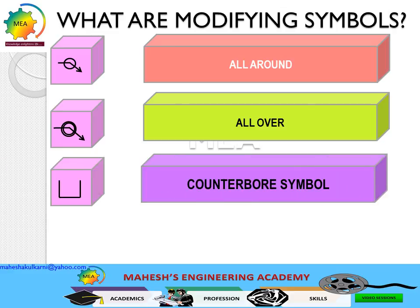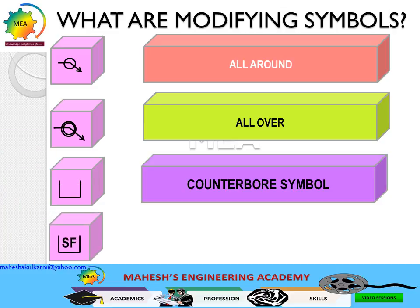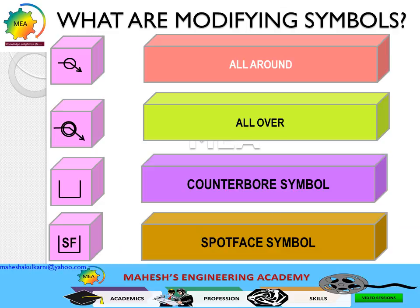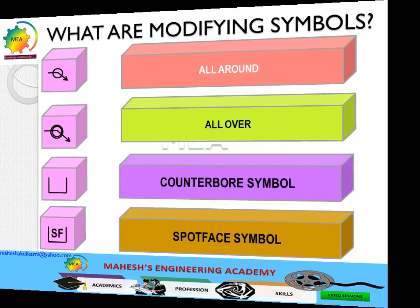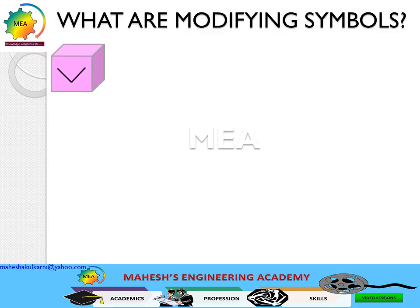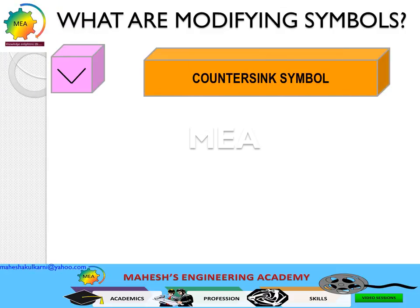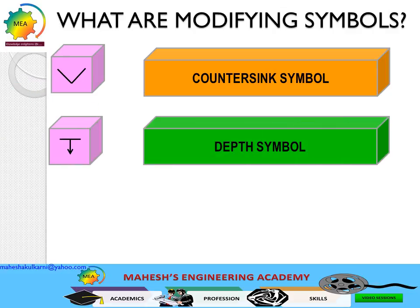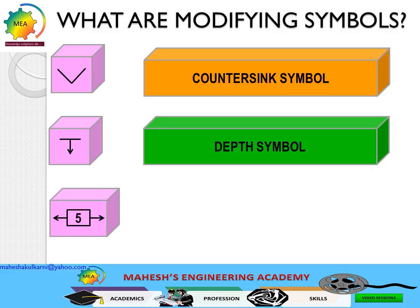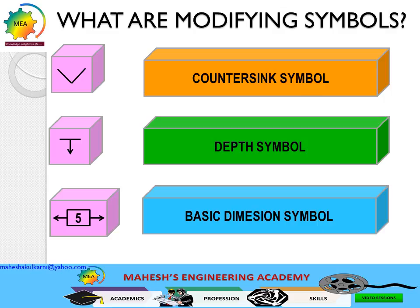Counterbore is a widely used symbol to represent a counterbore. When SF is specified along with the counterbore symbol, that indicates a spot face. The countersink symbol is used to represent a countersink. The depth symbol specifies the depth of a blind hole, counterbore, or spot face. When a dimension is enclosed in a box, that represents a basic dimension.